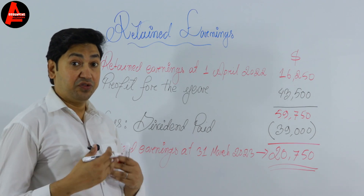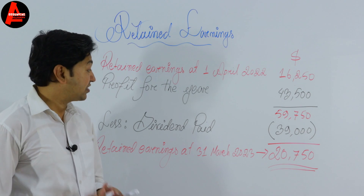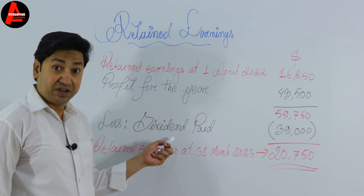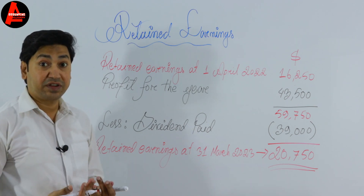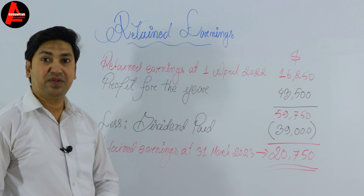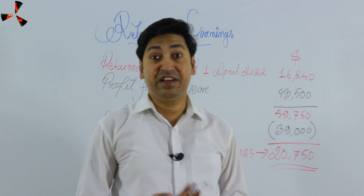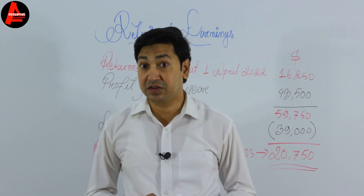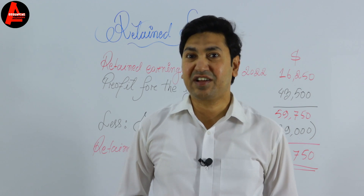If there were additional transactions — such as a proposed dividend or a transfer to general reserve — we would subtract those as well. Our next tutorial will cover how to prepare a balance sheet, that is, the statement of financial position, for a limited company.